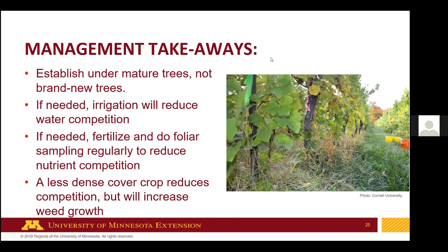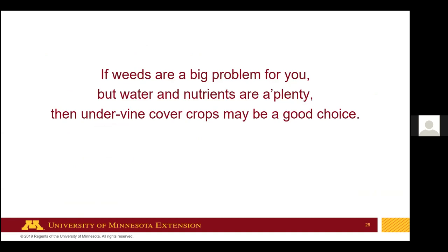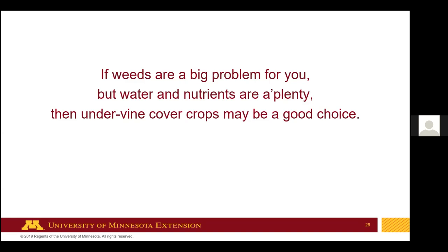Management takeaways: establish cover crops under mature trees, not brand-new ones — give those trees a chance to grow first. If needed, use irrigation to reduce water competition. Consider fertilizing and doing foliar sampling regularly to reduce nutrient competition, which is especially important if you have an understory cover crop also needing nutrients. A less dense cover crop will reduce competition but increase weed growth. If weeds are a big problem and you're trying to get away from herbicides but have plenty of water and nutrients, under-vine cover crops may be a good choice.